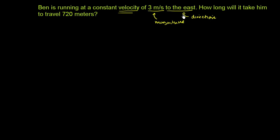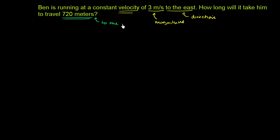How long will it take him to travel 720 meters? We might say 720 meters to the east to make it clear that it is a vector quantity — so that it's displacement as opposed to just distance. But we'll work through it both ways.